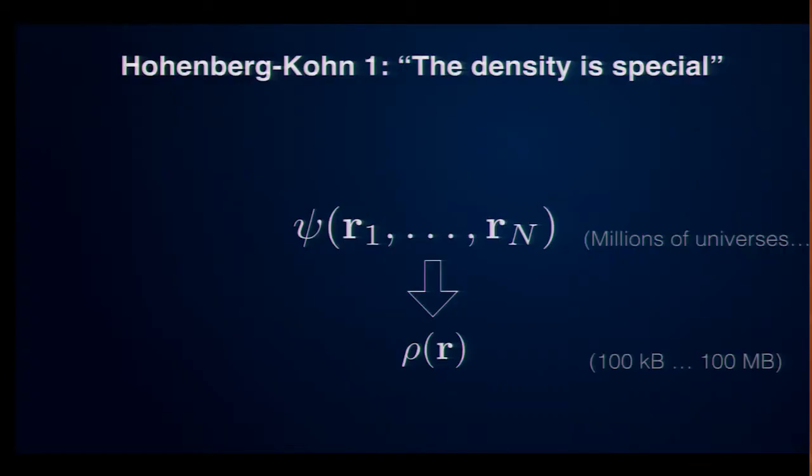So, in simple words, the first theorem tells you the density is special and the electron density is something you could compute if you had the wave function. And it basically tells you if you look at a certain point in space, what is the probability of finding any electron there? So, it is a function in one variable and it's a much, much simpler object than the wave function. The wave function would need these millions of universes to store it, while the density might boil down to a few hundred kilobytes to a few hundred megabytes. What this theorem tells you is something extremely astonishing.